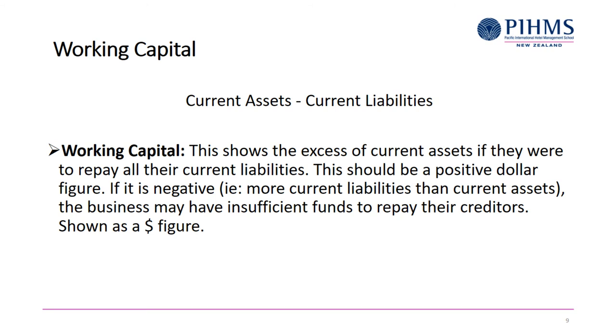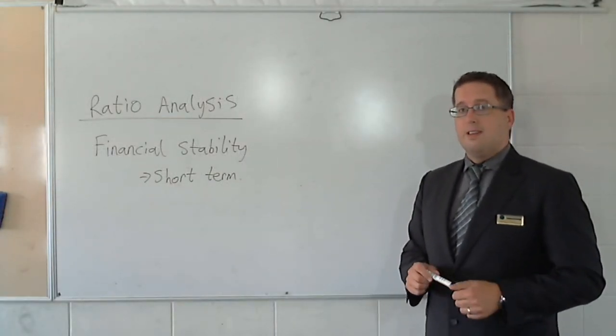Now the next one is working capital. Now this strictly isn't a ratio. This is working capital is actually a dollar figure. So as I read it out, this shows the excess current assets if they were to repay all their current liabilities. So you have current liabilities. Imagine you've repaid them all with the current assets. This is how much is left over. So it says it should be a positive figure. If it's negative, then they've got insufficient funds to repay their debts.